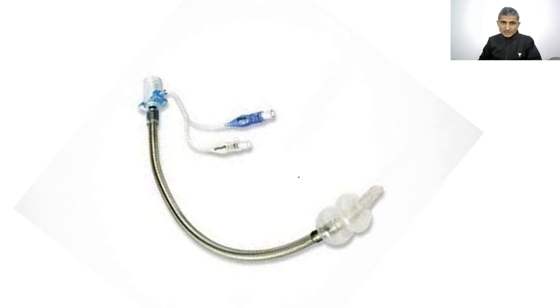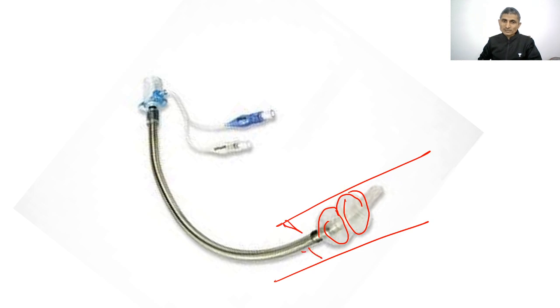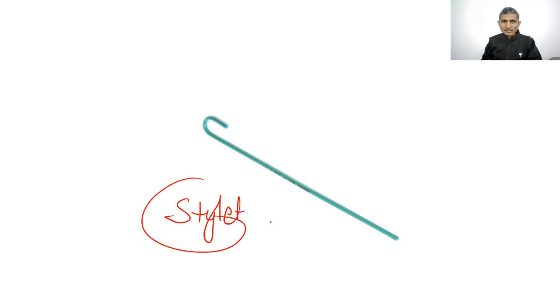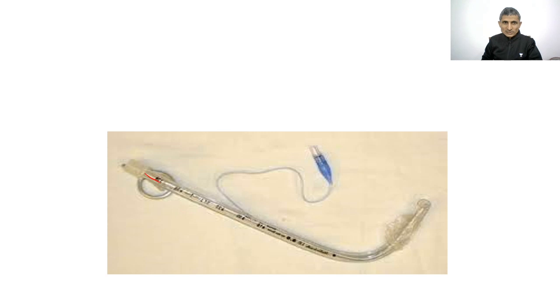Another special tube has two cuffs with two inflation systems and is used for laser surgeries. If one cuff is ruptured by the laser, the other cuff protects the airway from aspiration. A stylet made of malleable metal can be inserted into the endotracheal tube to shape it for difficult intubation.